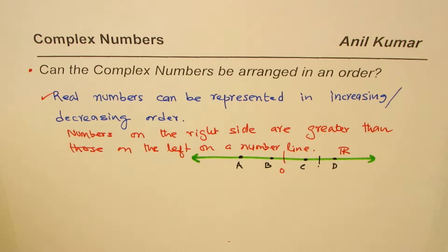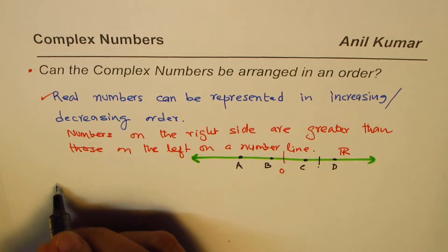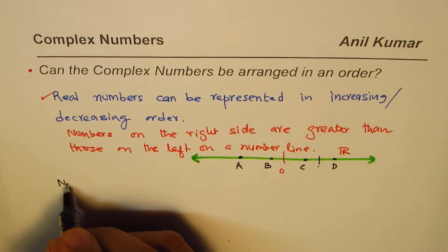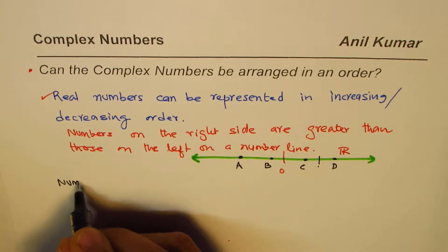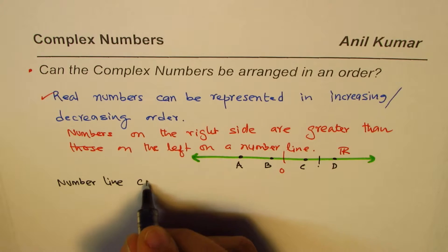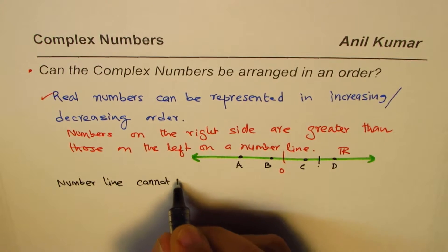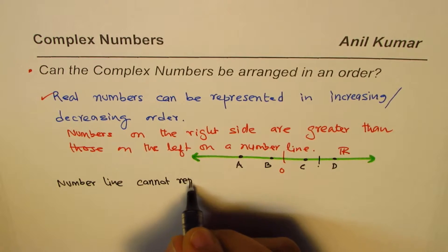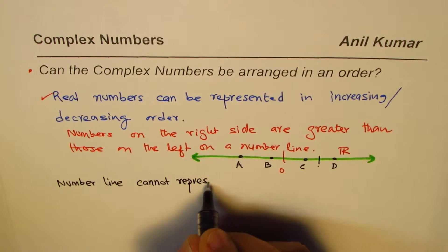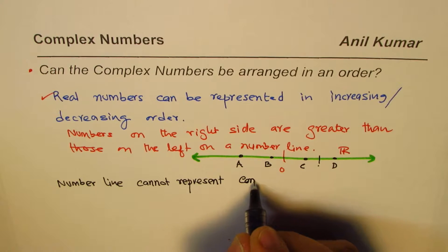How about complex numbers? As you know, complex numbers cannot be represented on a single line. So a number line cannot represent complex numbers.